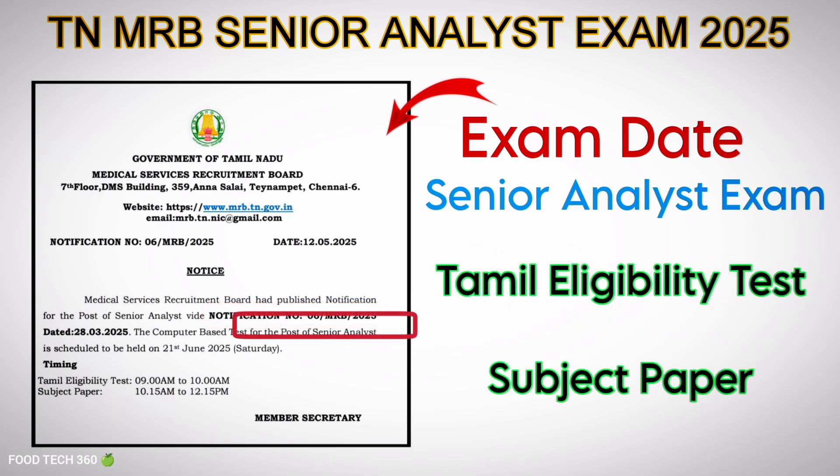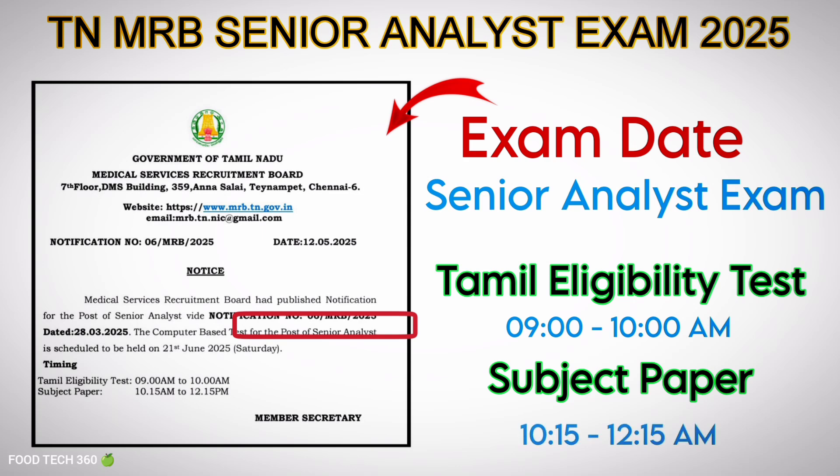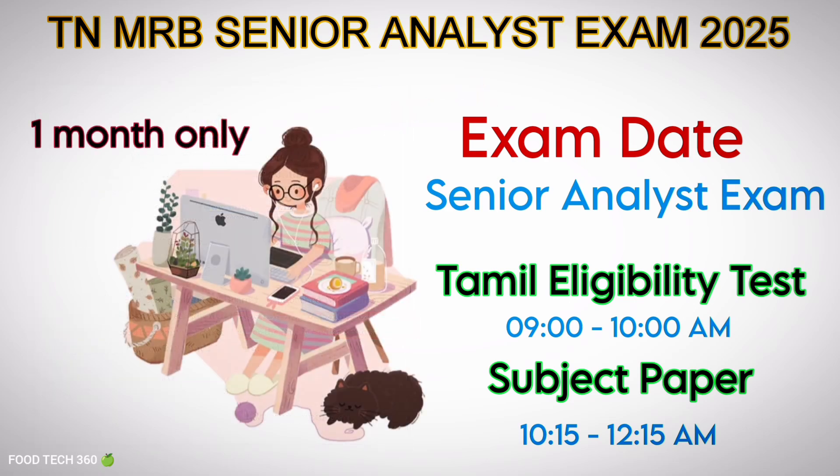As we all know, the exam will be of two parts. The first one is the General Eligibility Test and the other is the Subject Paper. Timing for the General Eligibility Test is from 9 AM to 10 AM, that is one hour, and the Subject Paper is from 10:15 to 12:15, that is two hours. So you have roughly just one month left for preparation.